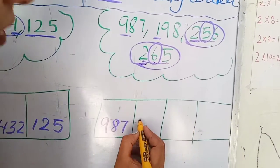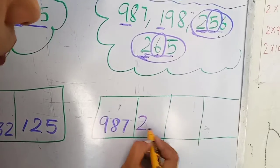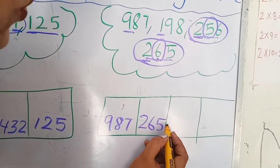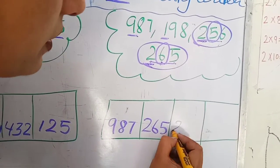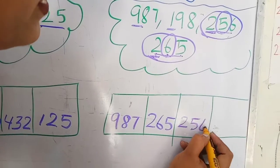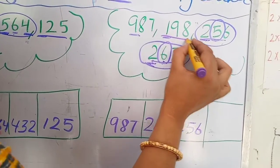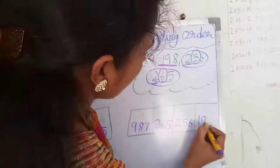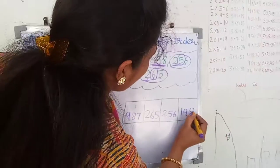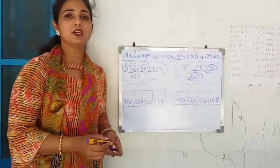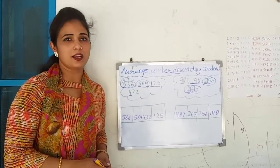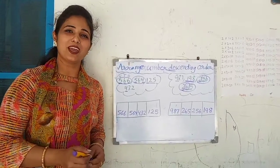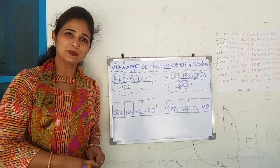So we write down 265 and then 256. The last and smallest number is 198. I hope children you understand the topic of descending order very easily. Thank you.